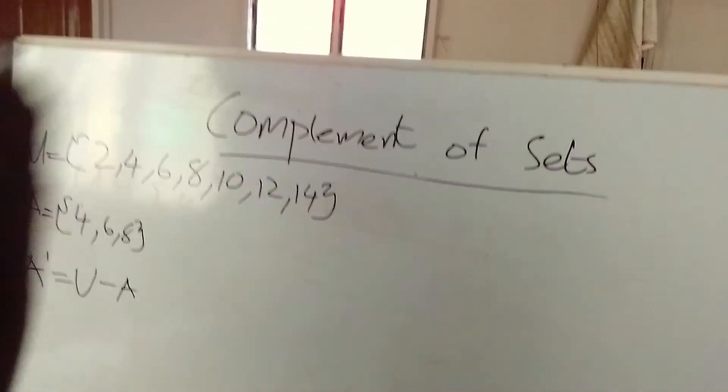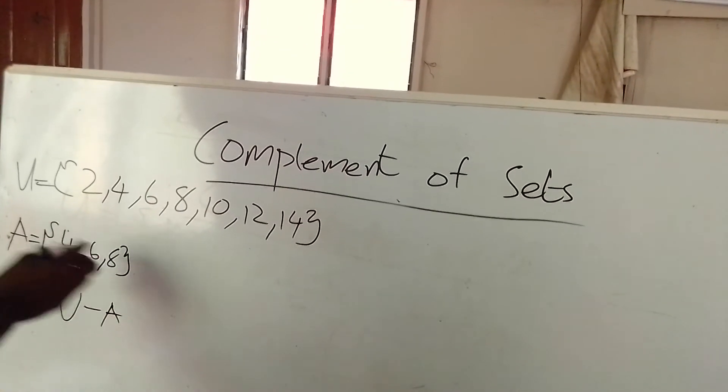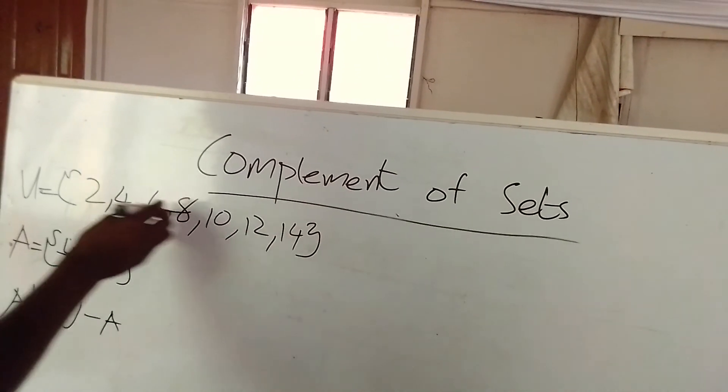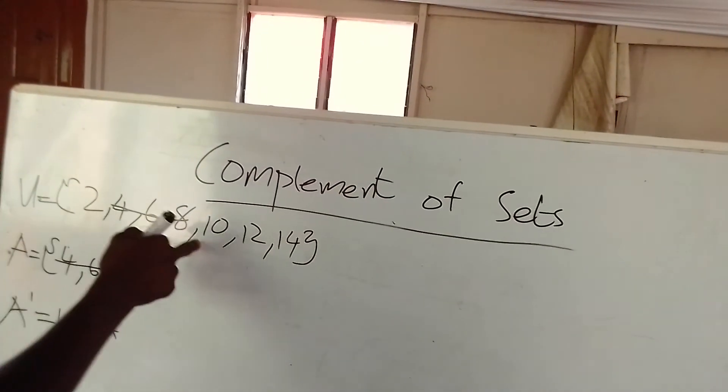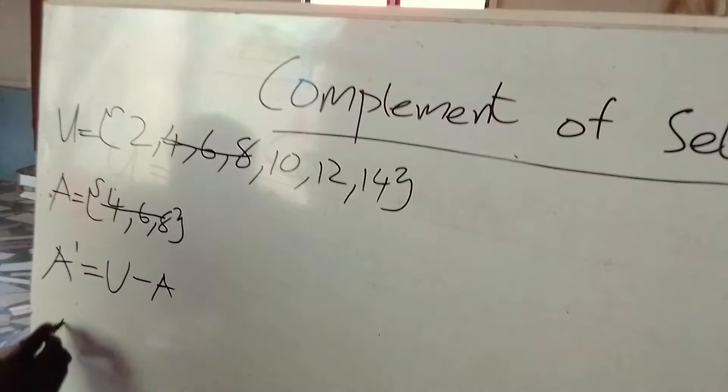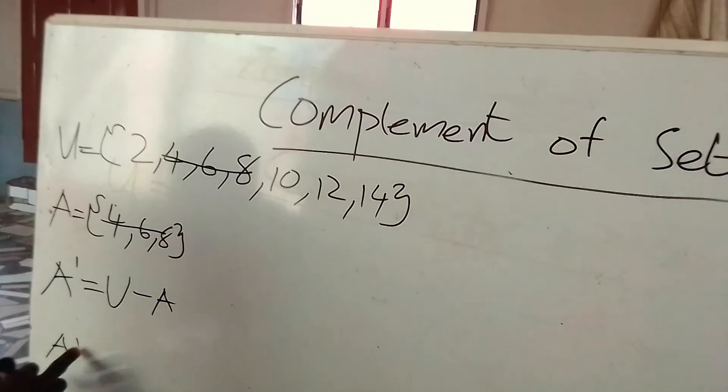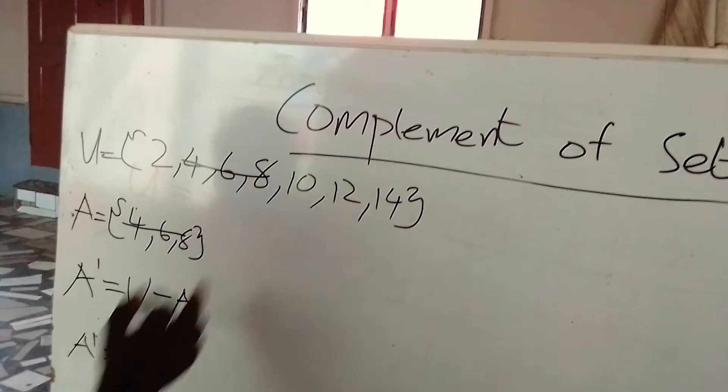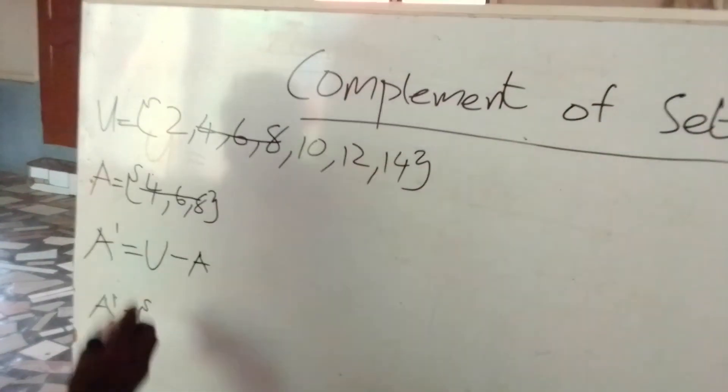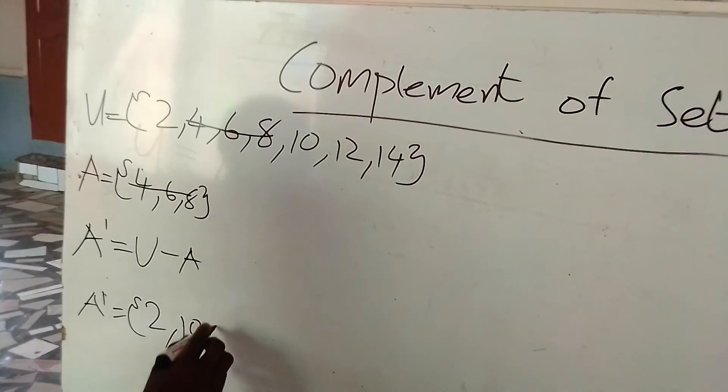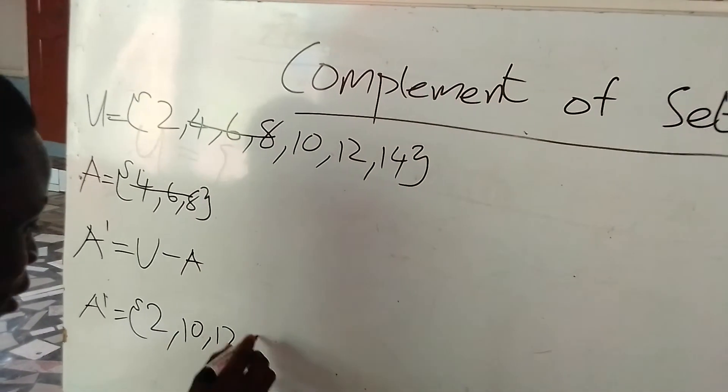So, you will cancel the members of A from the universal set itself and you write the rest of the members. So, it will be A complement. A complement equals the other set. So, you write 2, 10, 12, 14.